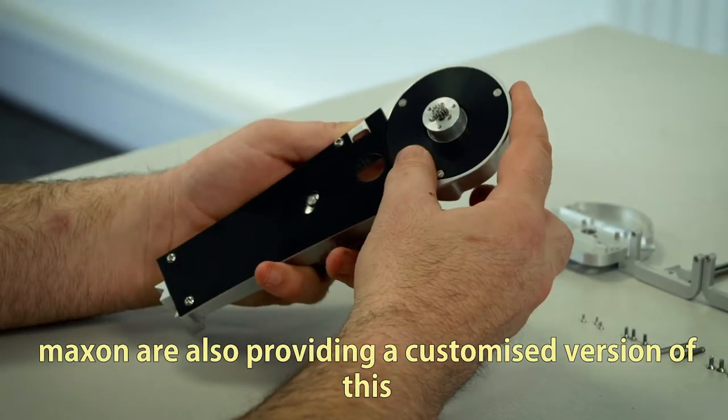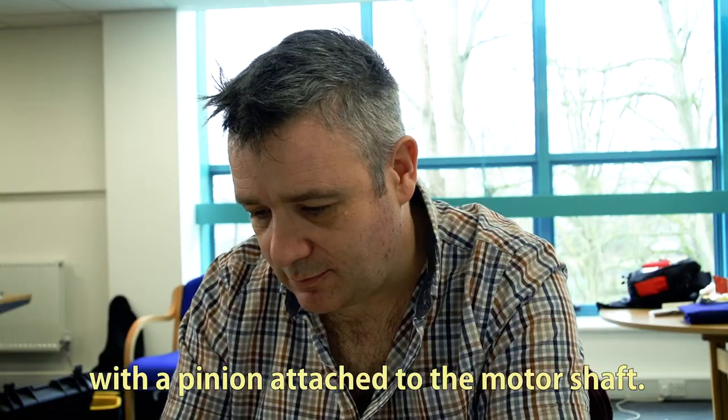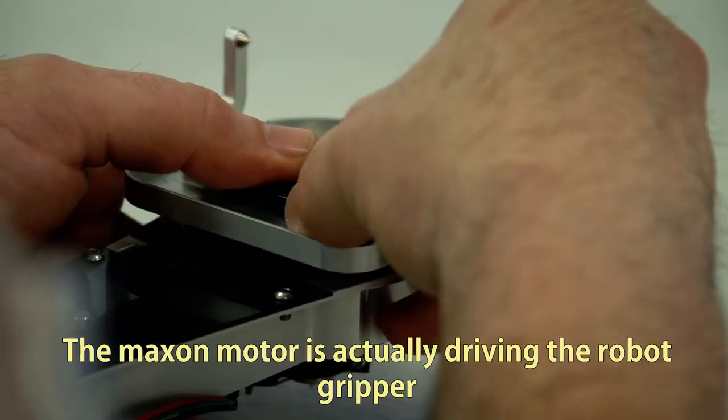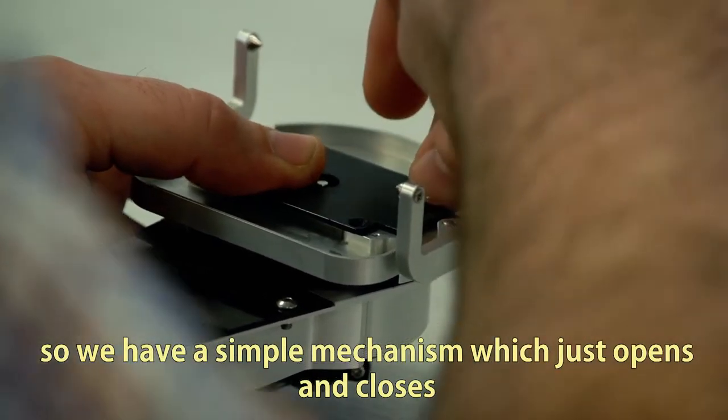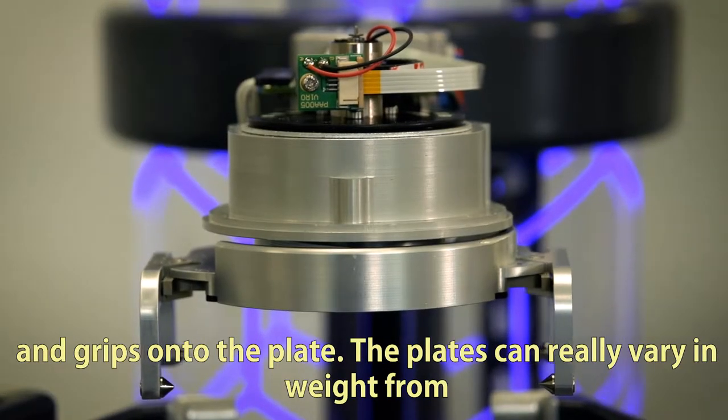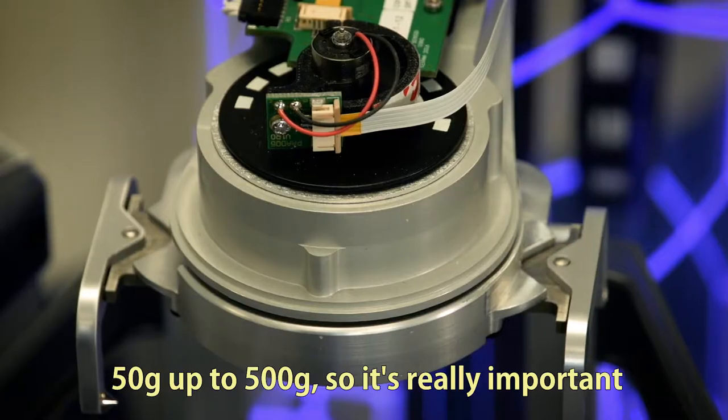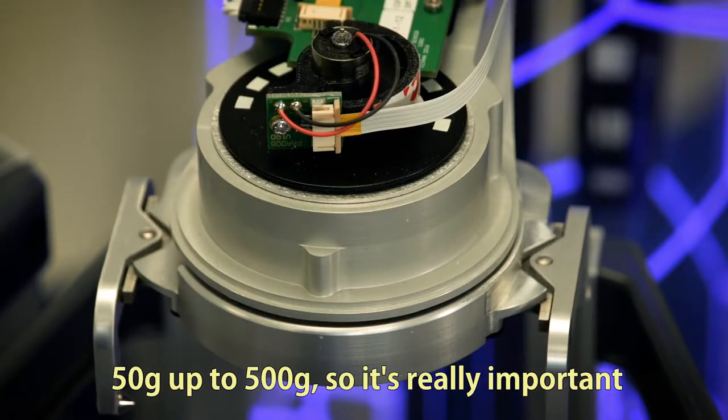Maxon are also providing a customized version of this with the encoder attached to the motor shaft. The Maxon motor is actually driving the robot gripper, so we have a simple mechanism which just opens and closes and grips onto the plate. The plates can really vary in weight from 50 grams up to 500 grams, so it's really important that the motor has a secure grip on the microplate.